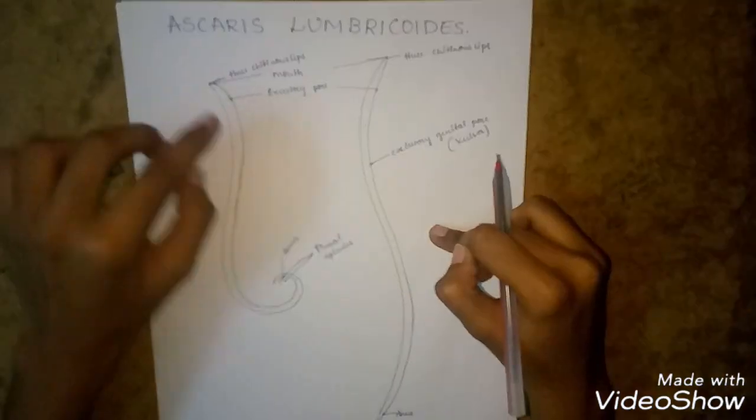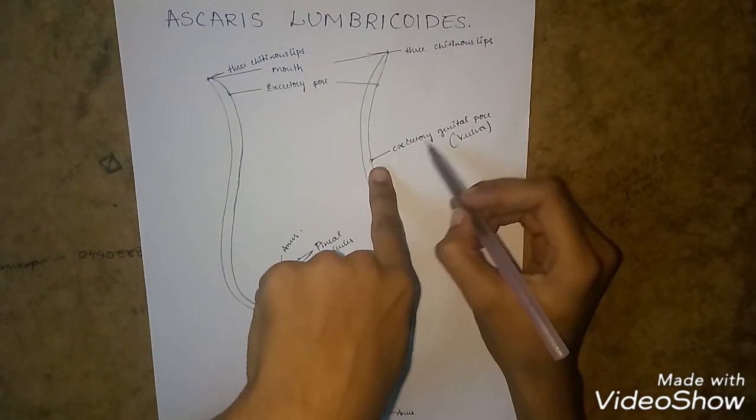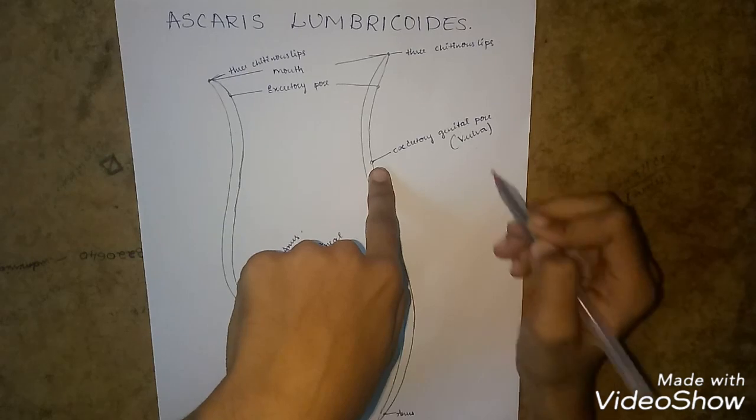In the female Ascaris, there is an extra pore known as the genital pore or vulva.